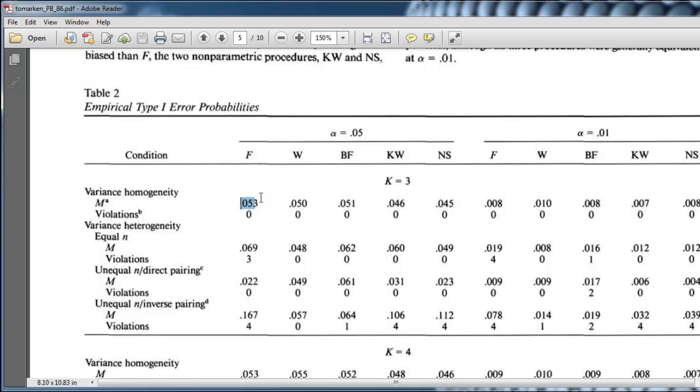and sample sizes are equal. So, the regular ANOVA is showing protection at 0.05, which is what you would expect. And you find that across all the tests.